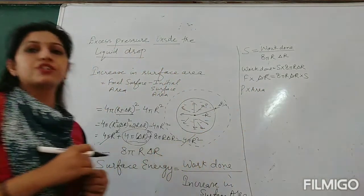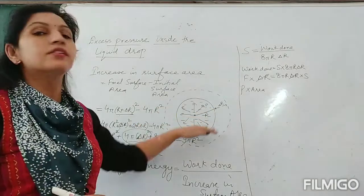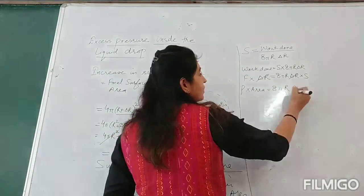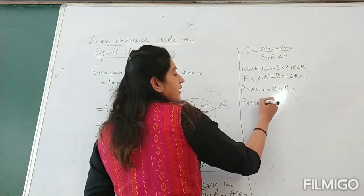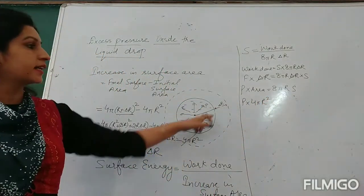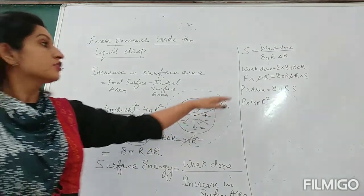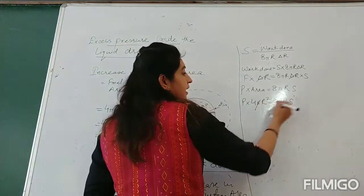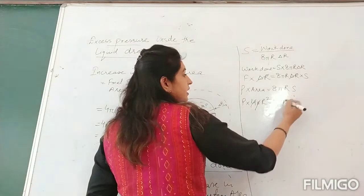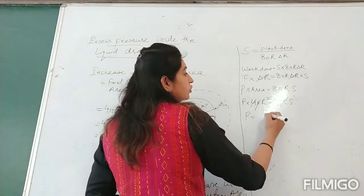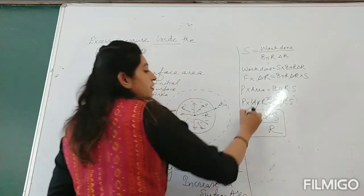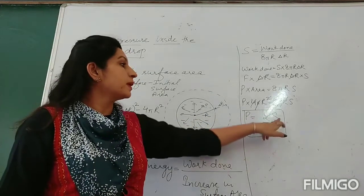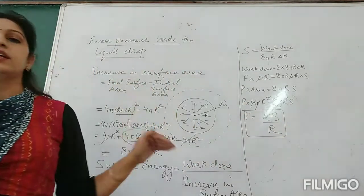Force equals pressure times area. So: P × area = 8πR·S. The area is the initial surface area 4πR² because that is the area on which pressure is acting. So P × 4πR² = 8πRS. Pi and pi cancel, R and R cancel, giving pressure P = 2S/R. This is the formula for excess pressure inside a liquid drop: P = 2S/R, where S is surface tension and R is the radius of the liquid drop.